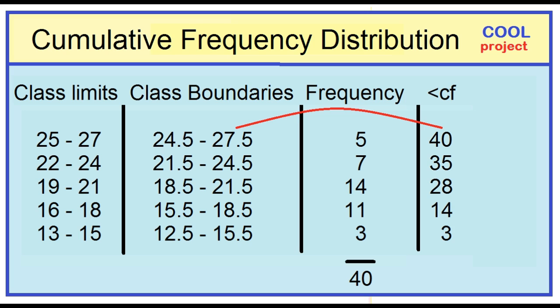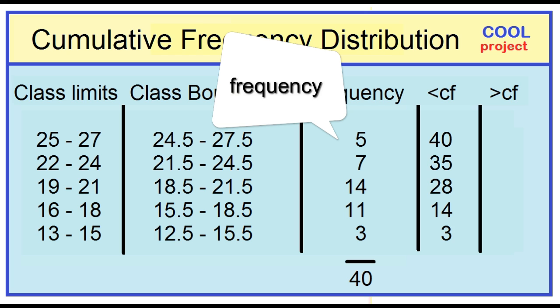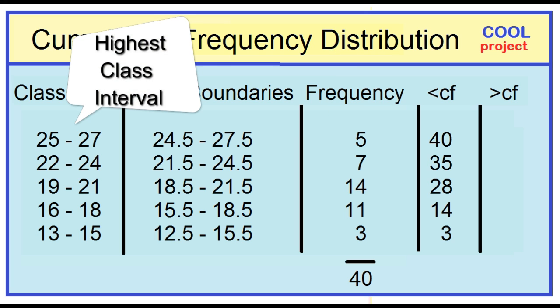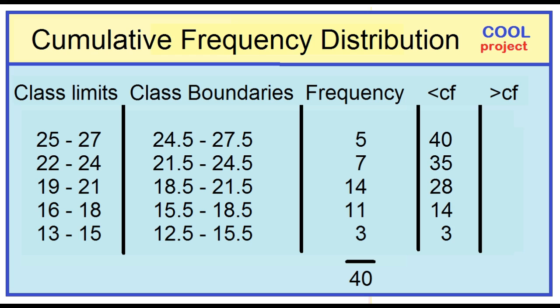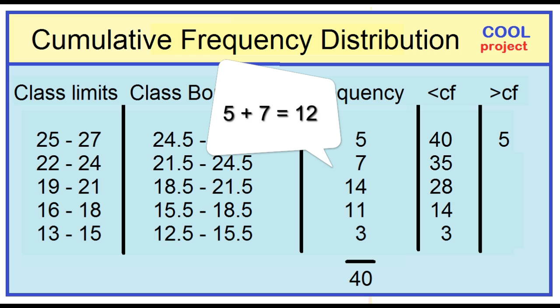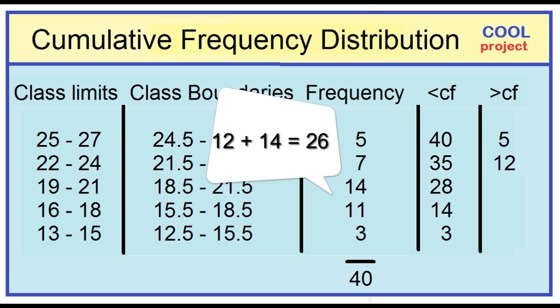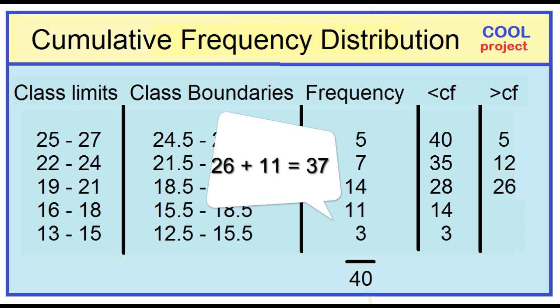How to calculate more than cumulative frequency. First, copy the frequency of the highest class interval. The highest class interval is 25 to 27 and the frequency is 5. Then add the frequency successively. 5 plus 7 is 12. 12 plus 14 is 26. 26 plus 11 is 37. 37 plus 3 is 40.